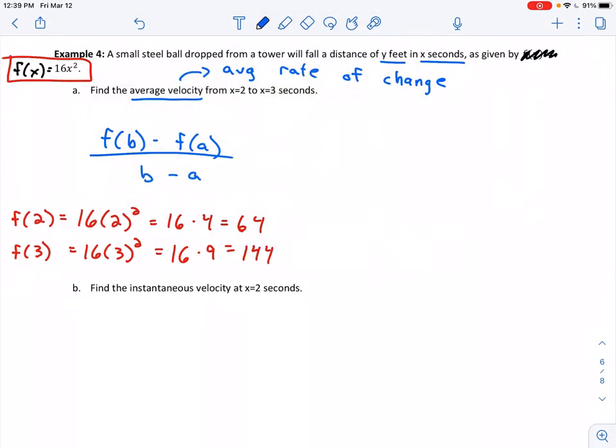To find the average velocity, I'm computing f(3) - f(2) divided by 3 - 2. So f(3) was 144 minus f(2) which was 64, divided by 3 minus 2. That's just 1. Simplifying the numerator, we're left with 80 over 1, or 80. We want to include a unit here. Since our distance is in feet and time is in seconds, our velocity is 80 feet per second. That's our answer for part A.